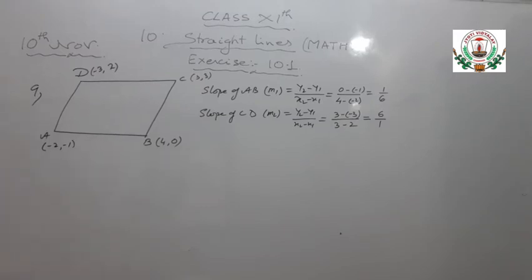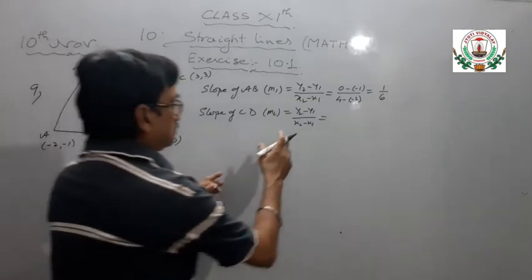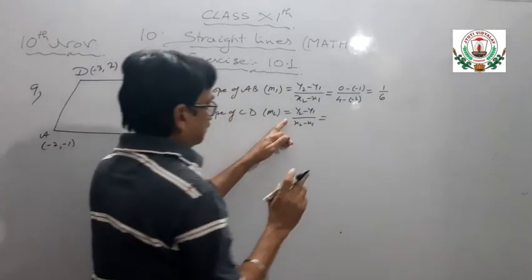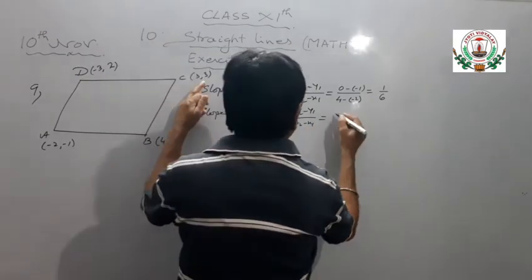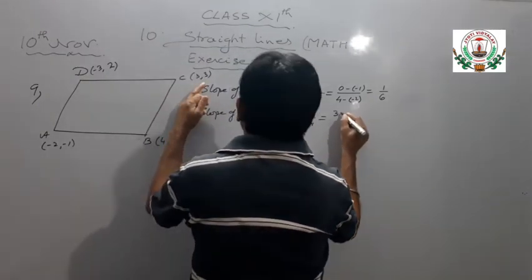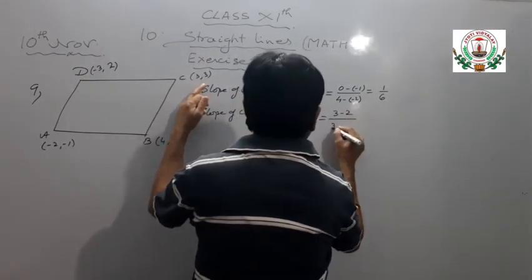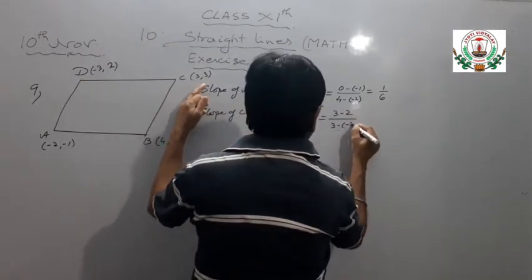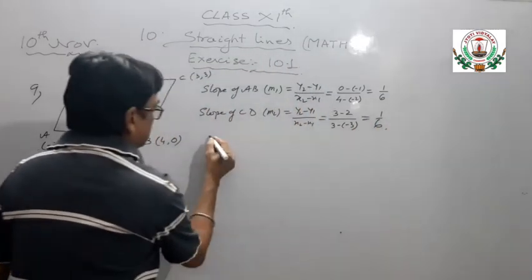Now the slope of CD: 3 minus 2 upon 3 minus (-3), that becomes 1 by 6.